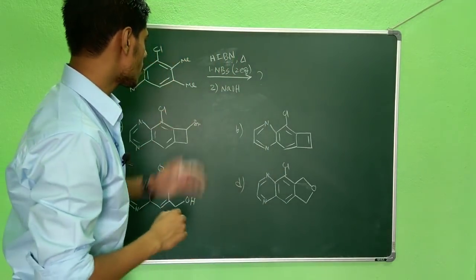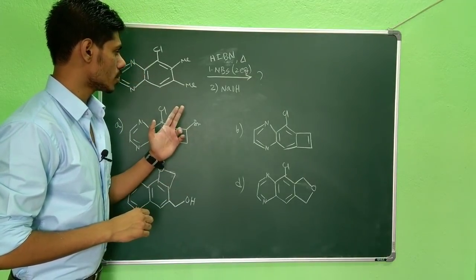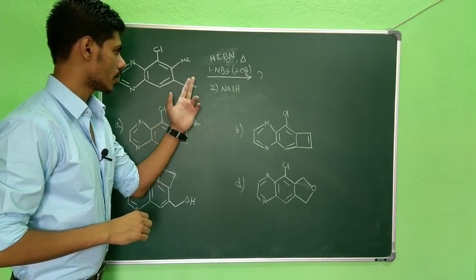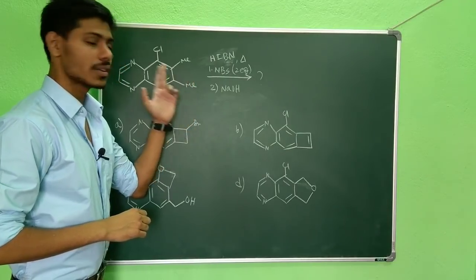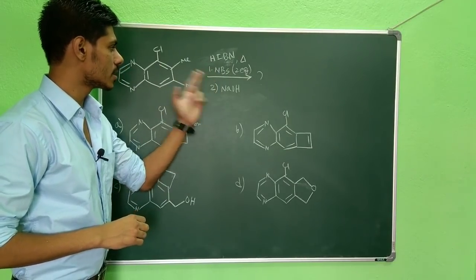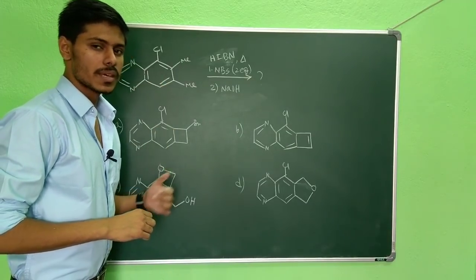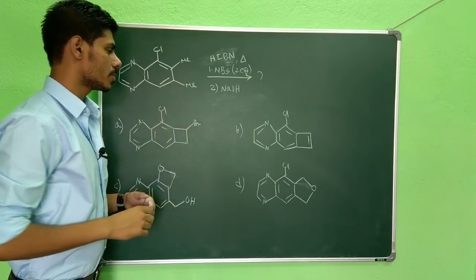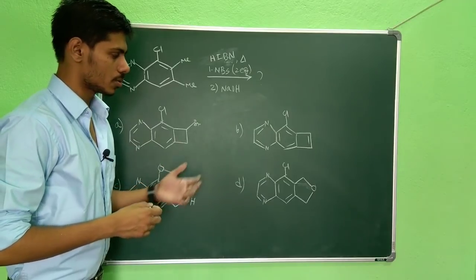This is the question you can see, and two important steps are there. The first one is the allylic bromination—as you can see, AIBN is given along with NBS, N-bromosuccinimide. And the second step is the cyclization reaction which we will see.